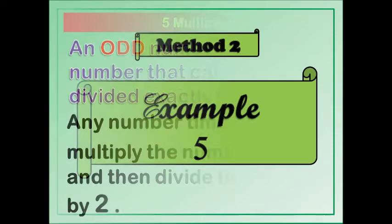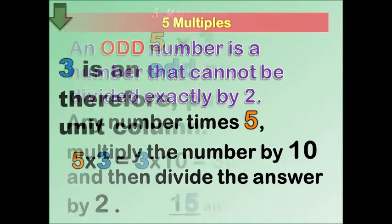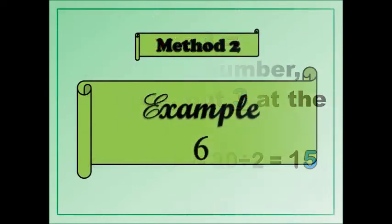Example five. An odd number is a number that cannot be divided exactly by two. Any number times five — multiply the number by ten and then divide the answer by two. So if you have five times three, multiply it by ten: three times ten is thirty, divided by two is fifteen. So three times five equals fifteen. If you like, for five times any number, multiply by ten and divide by two — that should be the answer.